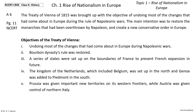Number one: undoing most of the changes that had come about in Europe during the Napoleonic Wars. Number two: the Bourbon dynasty's rule was restored. Number three: a series of states were set up on the boundaries of France to prevent French expansion in the future.